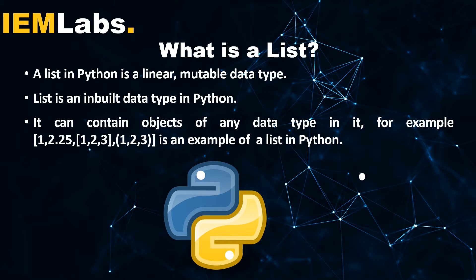A list in Python is a linear mutable data type. By linear I mean that a contiguous memory location is allocated whenever we declare a list, and mutable means that we can change and manipulate any and every element in a list. List is an inbuilt data type in Python, meaning we do not have to import any external module to work with lists. Lists can contain objects of any data type — integers, floats, or even lists within itself.